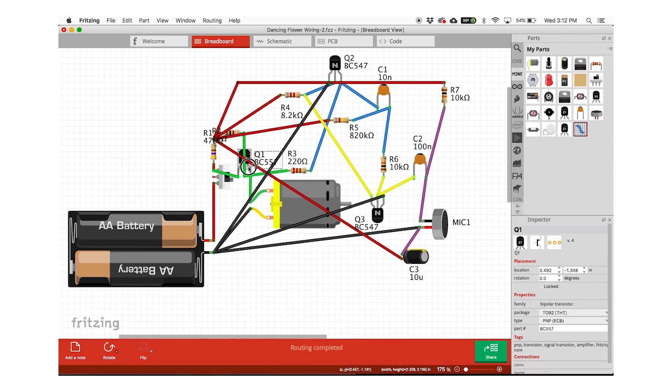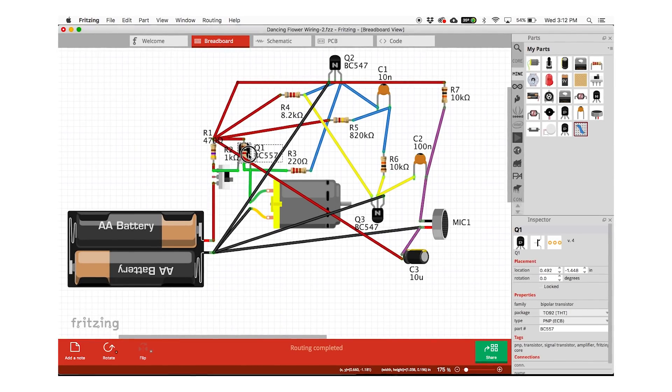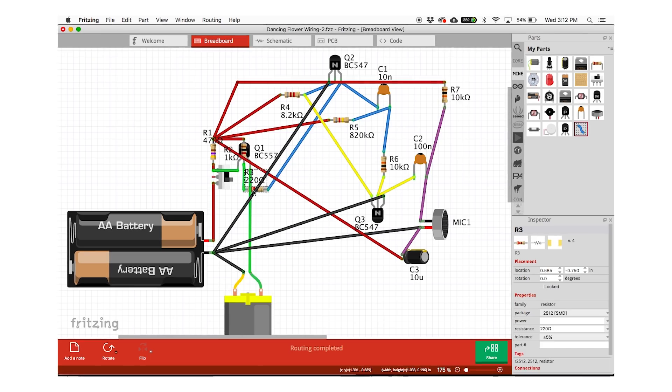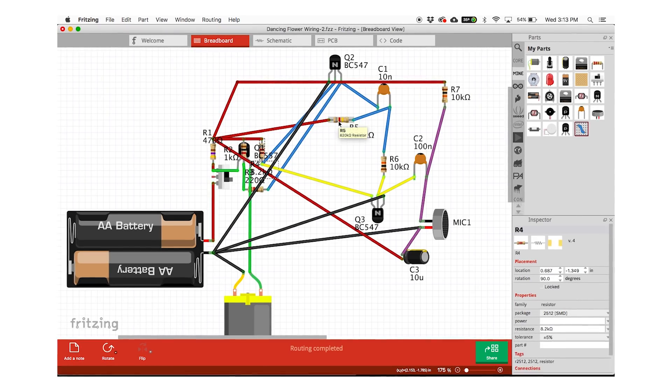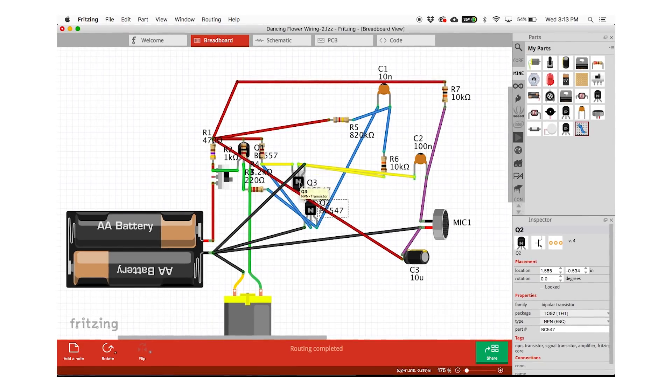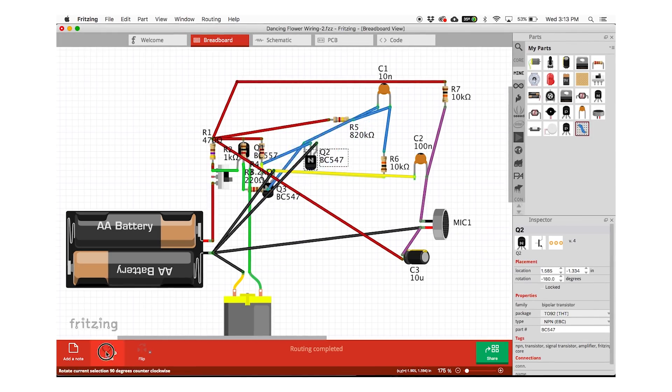I use the program fritzing to lay out my circuits. Here I've added all of my components and wires that show the connections. I can use this to move the components around to figure out a layout. But first let's look at how some of the connections can work.